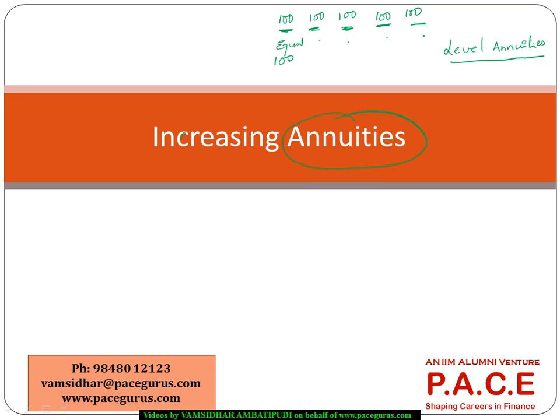But otherwise, if the payment is 100 in the first year, 120 in the second, 140 in the third, 160 in the fourth, wherein you are seeing an increase in the payment year over year or probably a decrease—say 100 here, 90 here, 80 here, 70 here. Pattern-wise decrease in the payments in each of the periods.